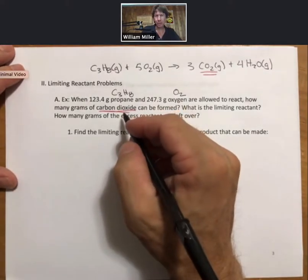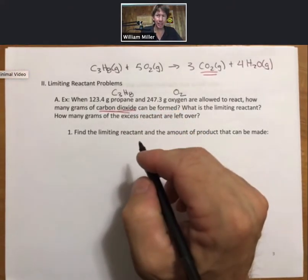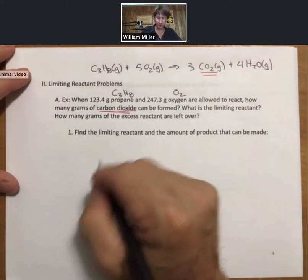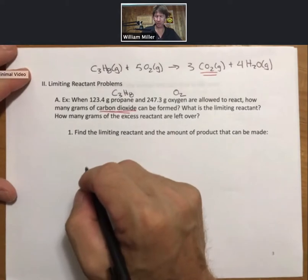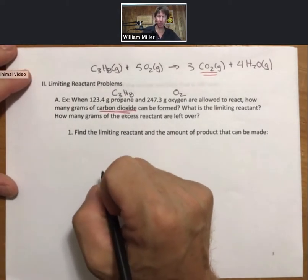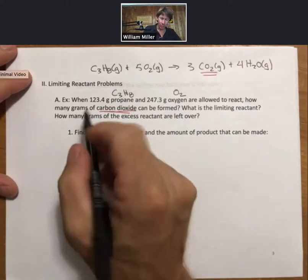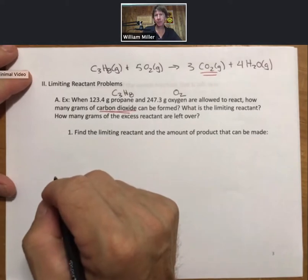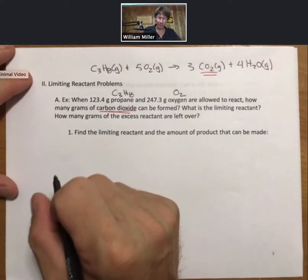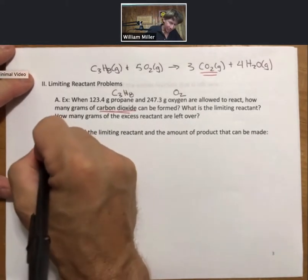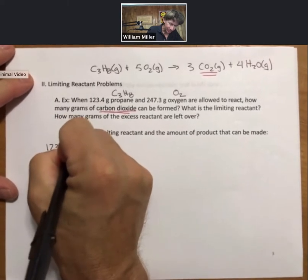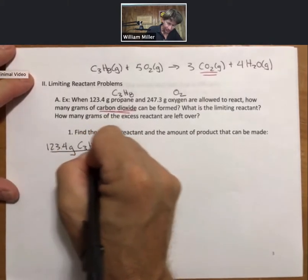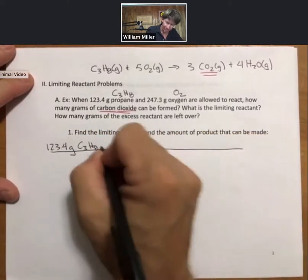Sometimes I don't tell you, I just ask for the limiting reactant, and you get to choose which product you're going to. But since this problem calls out carbon dioxide, we will do our calculations towards carbon dioxide. We will take each of the grams of propane and the grams of oxygen and do stoichiometry towards finding the products. I'll start with my grams of propane.